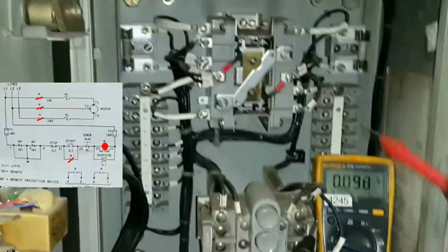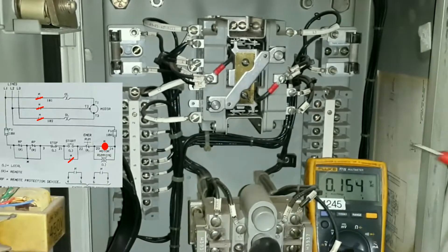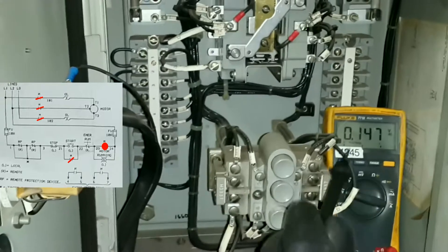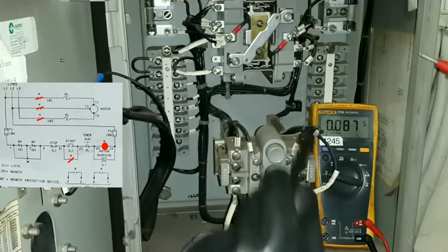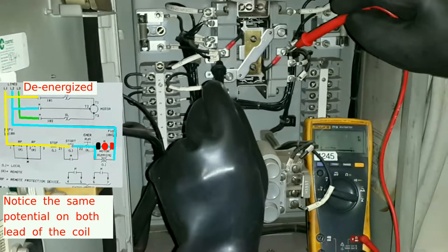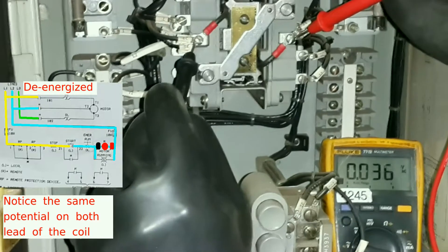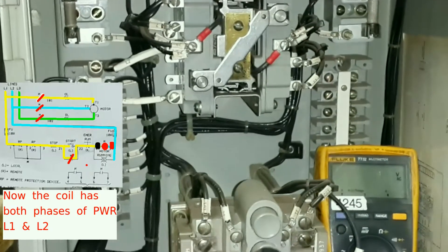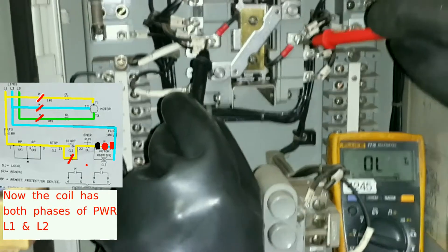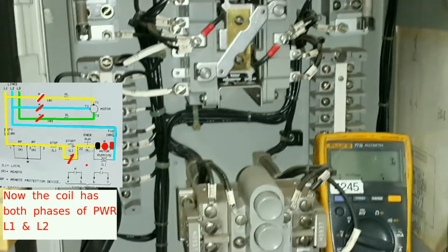Now we're going to look at the contactor. See how the contactor is energized. I'm going to de-energize it. Now the contactor is de-energized, so a de-energized contactor should be 0 volts. Now when the contactor is energized, it will get 440.